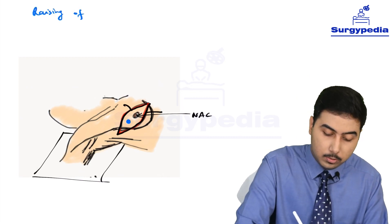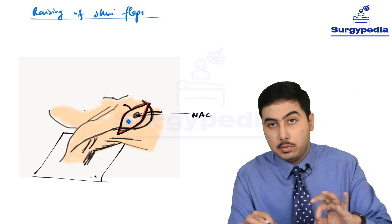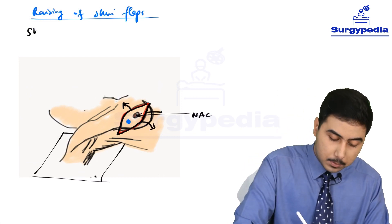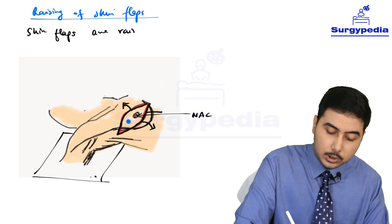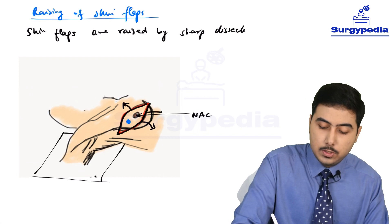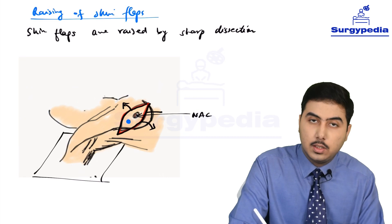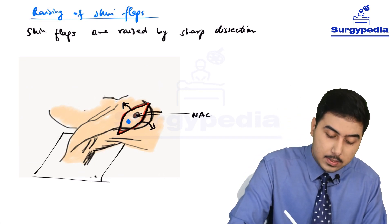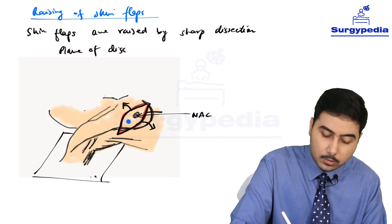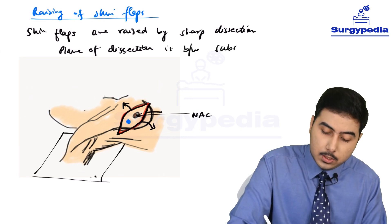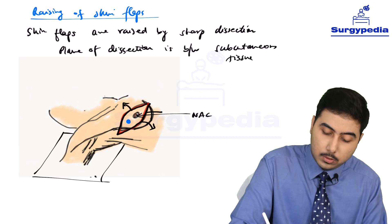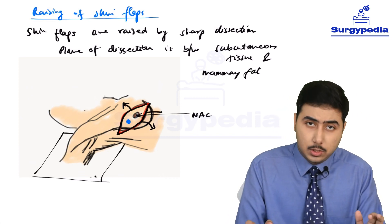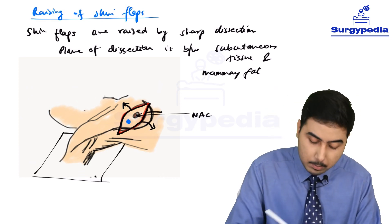The next step is raising of skin flaps. Once we have made the incision, we have an upper part and a lower part. The skin flaps are raised by sharp dissection — we use scissors and scalpel. The plane of dissection is between the subcutaneous tissue and mammary fat, so we include the subcutaneous tissue and fat along with the skin flaps.